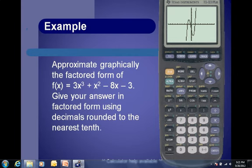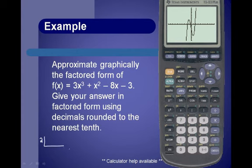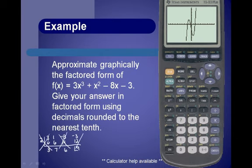Can we eyeball the x-intercepts? It looks like it might be positive 2. If we check by doing synthetic division with 2 — 3x to the third, 1x squared, negative 8x, negative 3 — dropping the 3, multiplying, 7 times 2 is 14, negative 8 and 14 is 6, giving 12. This will not give a remainder of zero, therefore 2 is not a factor.